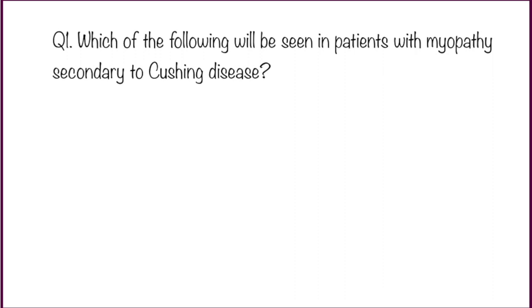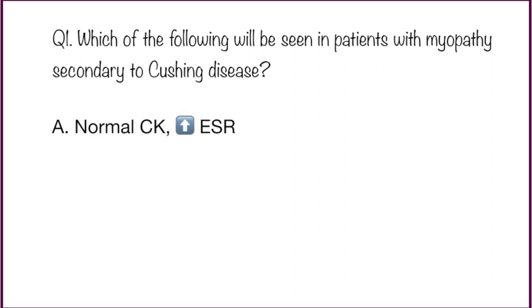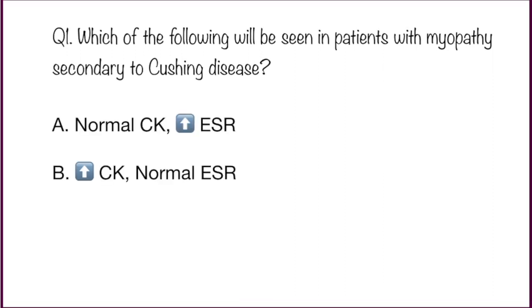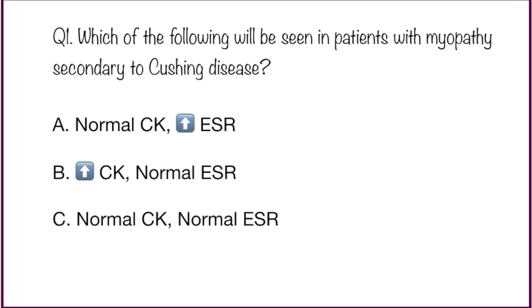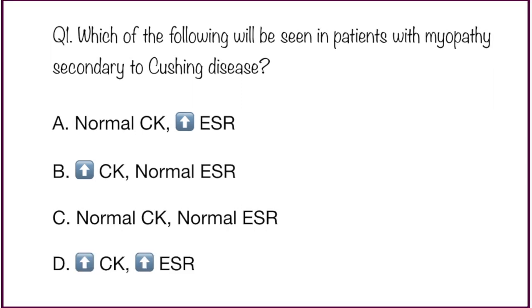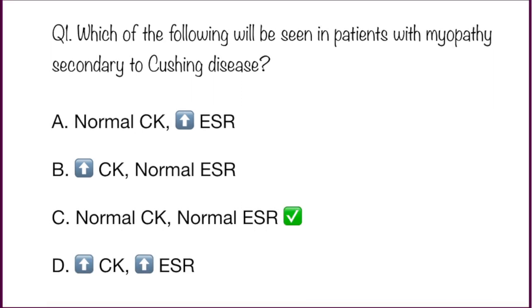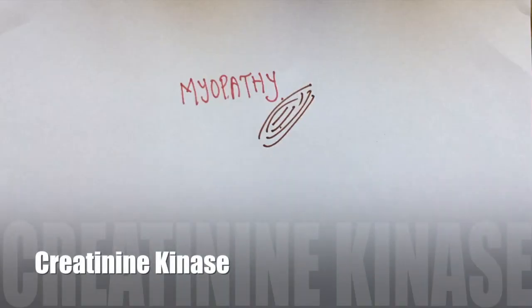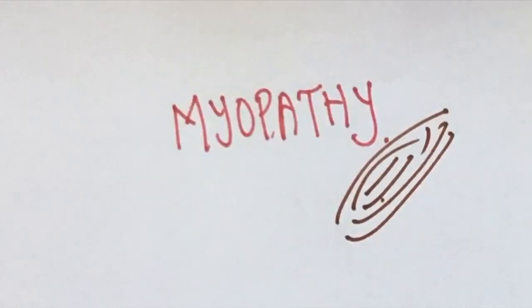Question number one: which of the following will be seen in patients with myopathy secondary to Cushing disease? Option A: normal CK, high ESR. Option B: high CK, normal ESR. Option C: normal CK, normal ESR. Option D: high CK, high ESR. The answer to this question is normal CK and normal ESR.